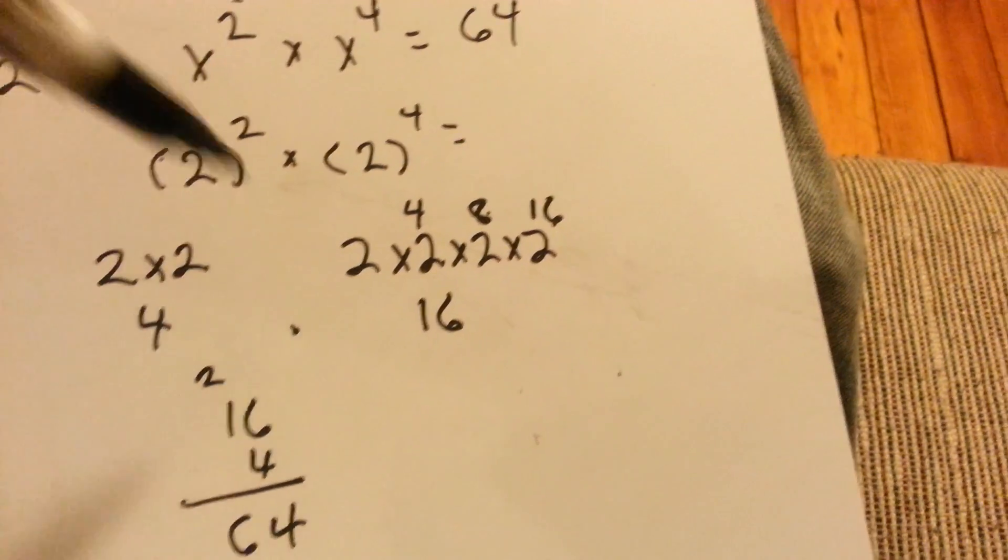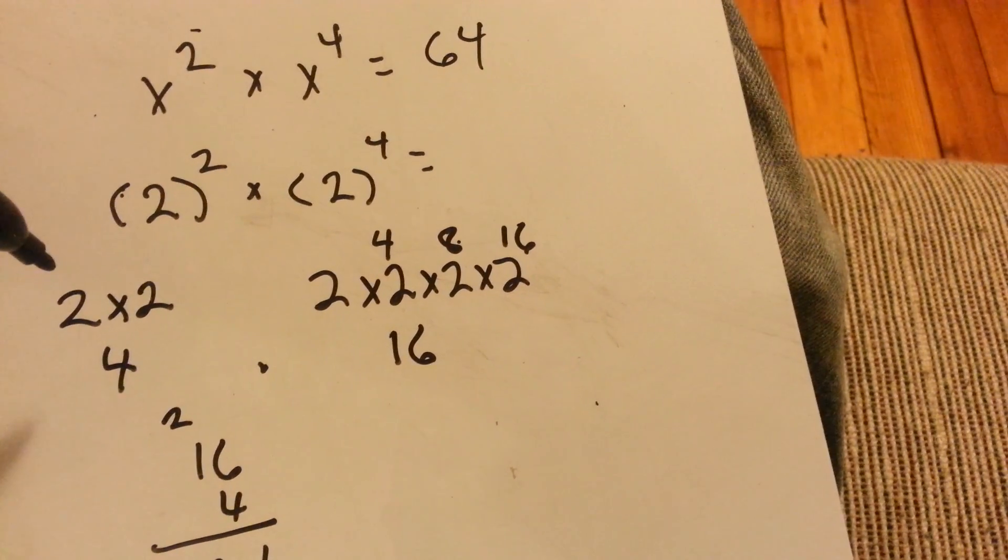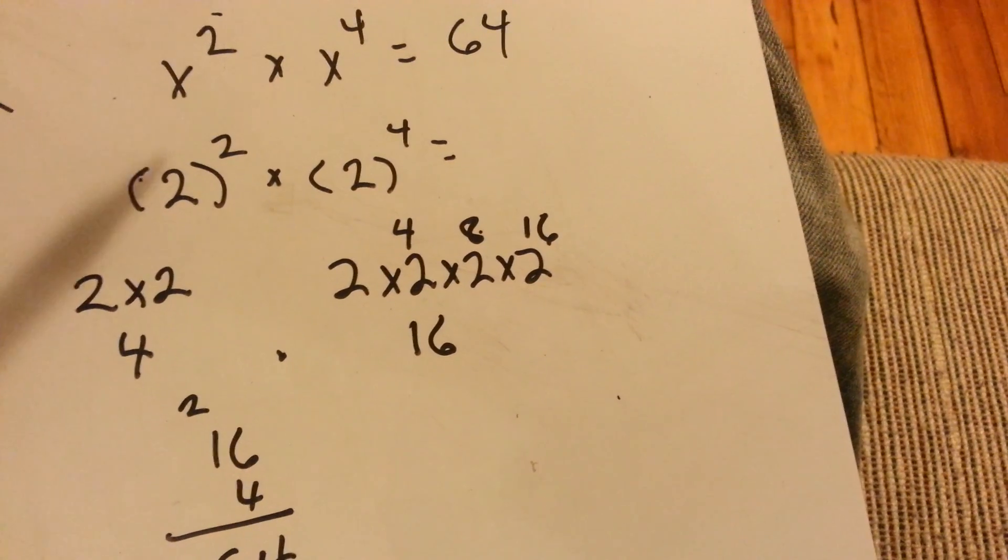So x squared times x to the 4th, when x equals 2, equals 64. And you can see that you add the exponents.